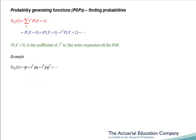Now we have our series expansion, we can use our rule to find the probabilities. The probability x equals 0 is the coefficient of the t to the 0 term, i.e. the term with no t's. Since we have no terms with no t's, the probability x equals 0 must be 0. The probability x equals 1 is the coefficient of the t term, so the probability x equals 1 is p. The probability x equals 2 is the coefficient of the t squared term, so the probability x equals 2 is pq. Similarly, the probability x equals 3 is pq squared, and so on. However, if we knew the distribution was geometric, it would be easier just to look up the probability function in the tables.